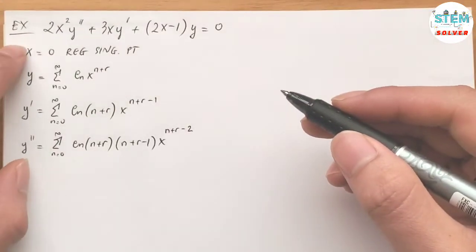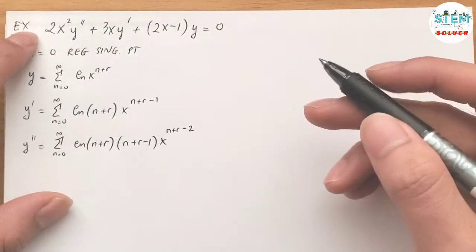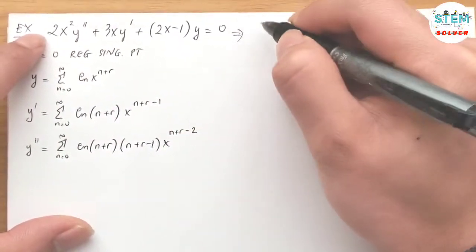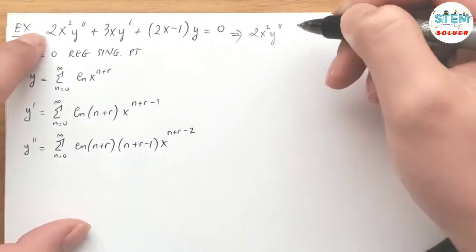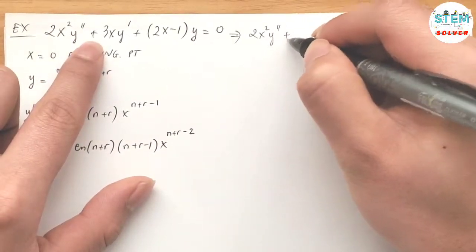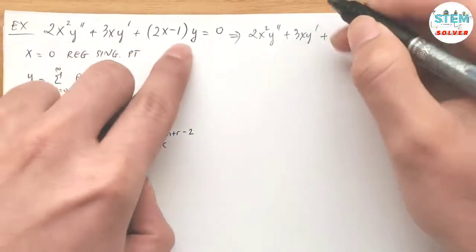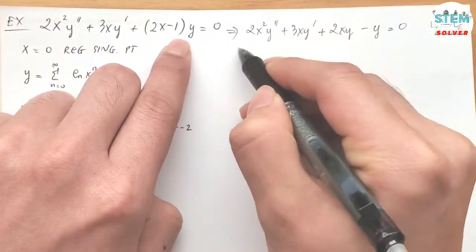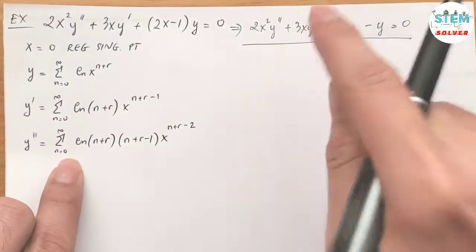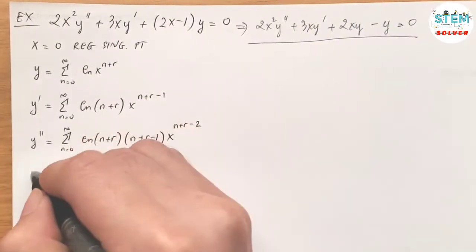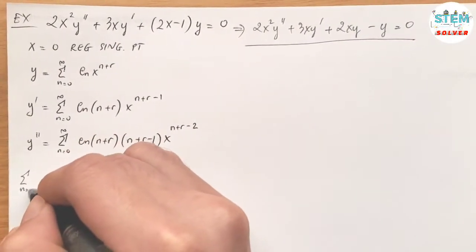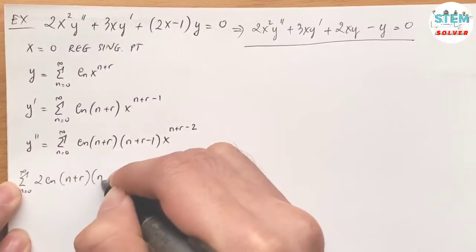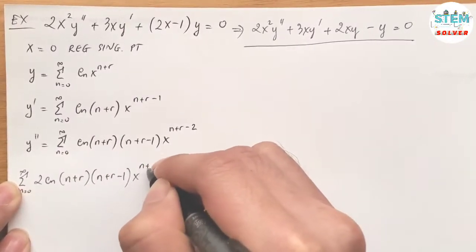Now I'm going to plug this into the differential equation, but before I do that I'm going to distribute it out. So I have 2x²y″ + 3xy′ + 2xy − y = 0. Now plugging in, I have Σ from 0 to ∞ of cₙ (n+r)(n+r−1) xⁿ⁺ʳ — because x² times xⁿ⁺ʳ⁻² gives xⁿ⁺ʳ.